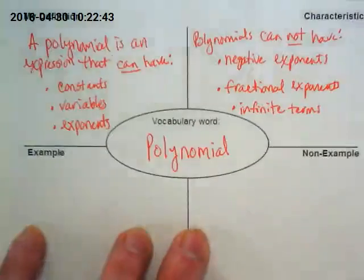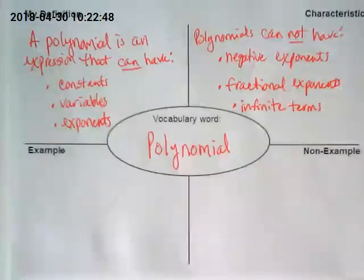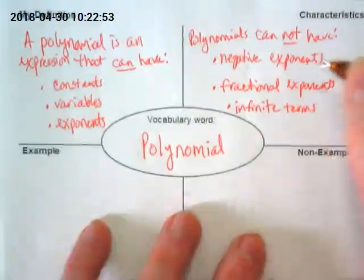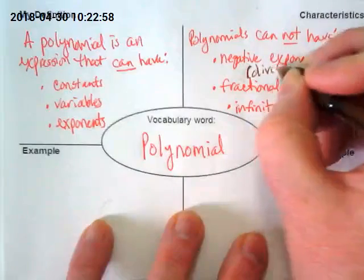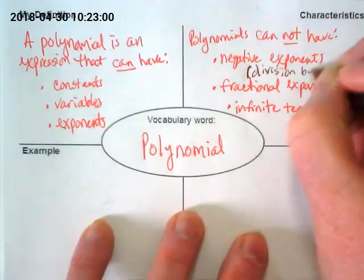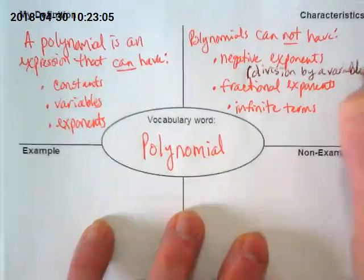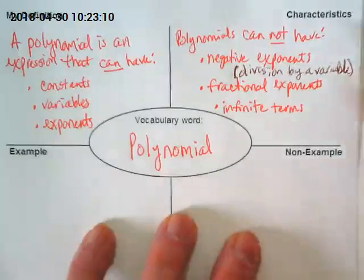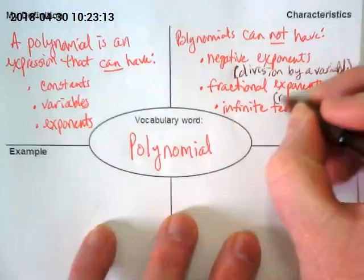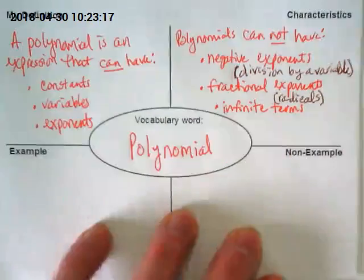Just a quick review. When we're talking about negative exponents, that's division by a variable. Remember, with our exponent rules, if we have a negative exponent, we put them in the denominator — that's not going to happen in polynomials at all. Fractional exponents — the other half of fractional exponents is radicals. Those will not be in these either.